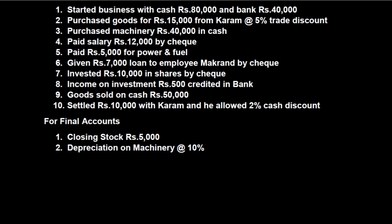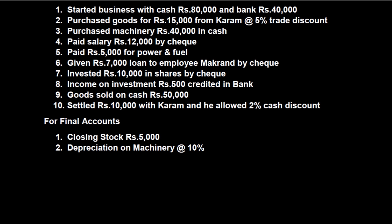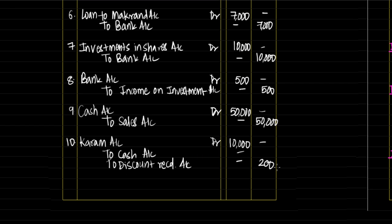Next, goods sold on cash Rs. 50,000 — it is a sales entry. Cash is coming into the business: cash account debit, goods going out to sales account Rs. 50,000 on both sides. Last entry: settled Rs. 10,000 with Karam and he allowed 2% cash discount. 10,000 into 2% gives cash discount of Rs. 200 — it is a gain for us as Karam is our creditor. Journal entry: debit the receiver, credit what goes out, credit incomes and gains — Karam account debit 10,000, cash account credit 9,800, discount received account credit 200.